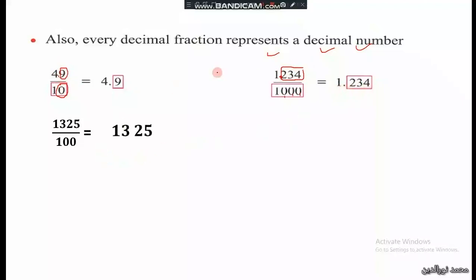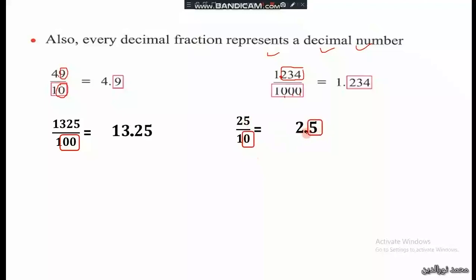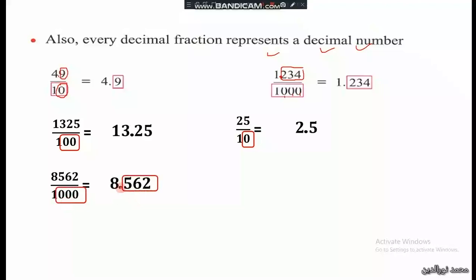Using the same method: two zeros means two decimal digits, so we put the point here — thirteen point twenty-five. Then twenty-five over ten: one zero means one decimal digit, so two point five. Eight thousand five hundred sixty-two over one thousand: three zeros means three decimal digits, so we put the point here.